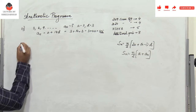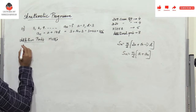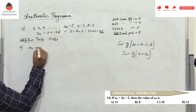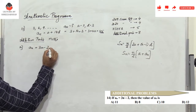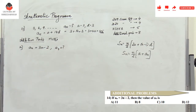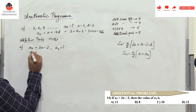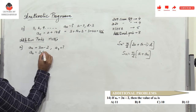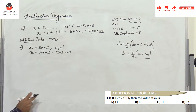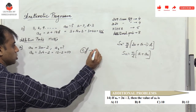Now solving additional multiple choice problems. Problem 14: aₙ = 3n - 2, find a₄. Substitute n = 4: 3×4 - 2 = 12 - 2 = 10. Among the four options, option C (which corresponds to 10) is the right answer.